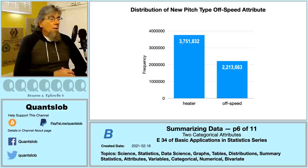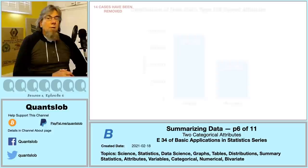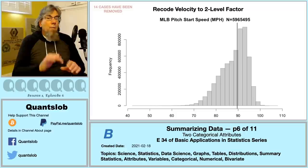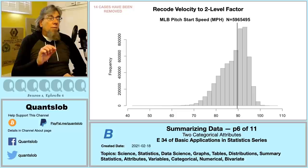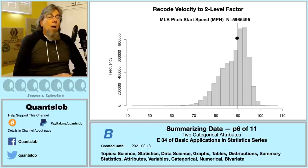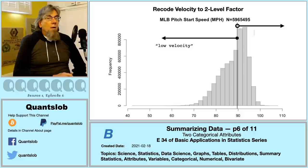Looking at the distribution of our new categorical attribute in a bar chart, there's a fairly heavy preponderance of heater pitches — about 3.8 million heaters compared to about 2.2 million off-speed pitches. Next, we create another two-level factor from our numerical attribute pitch start speed (velocity), splitting at the median value of 89.5 mph. Pitches at or below 89.5 mph are categorized as 'low velocity'; those above 89.5 mph as 'high velocity.'